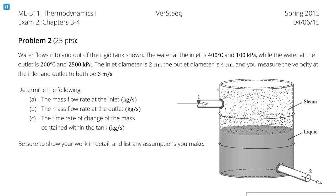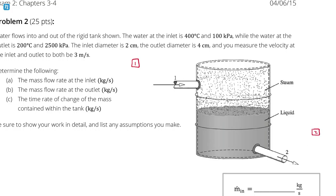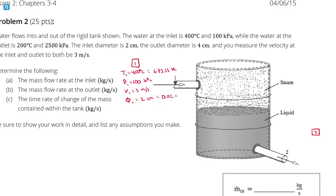In this rigid tank, I'll call the inlet state 1 and the outlet state 2, as the diagram has done. T1 is 400 degrees Celsius, which is 673.15 Kelvin. P1 is 100 kilopascals, or 1 bar. The velocity at the inlet is 3 meters per second, and the diameter at the inlet is 2 centimeters, which is 0.02 meters.